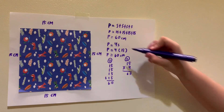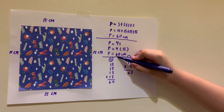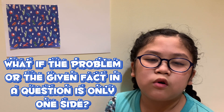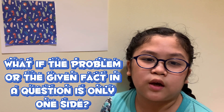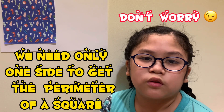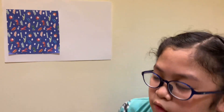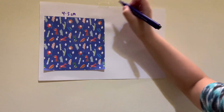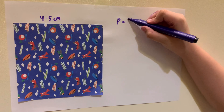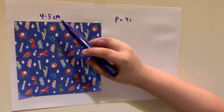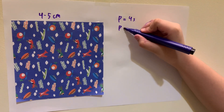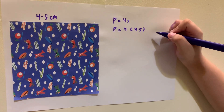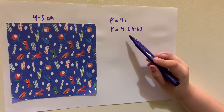If you use addition and multiplication, you will still get the same answer. What if the problem or the given fact in a question is only one side? Don't worry, because we need only one side to get the perimeter of a square. Let's try — for example, 4.5 centimeters. The formula is P equals 4S. So P equals 4 times 4.5.